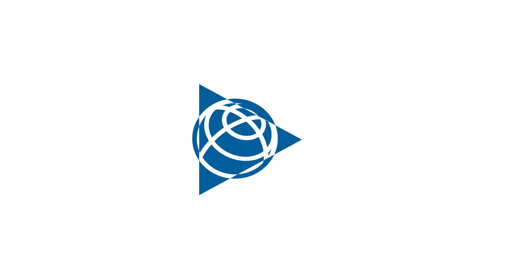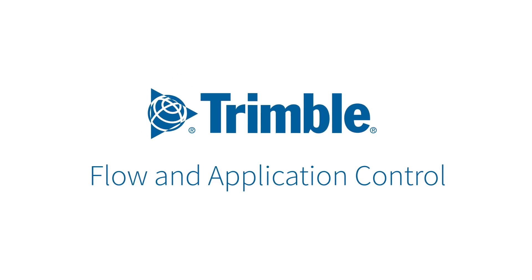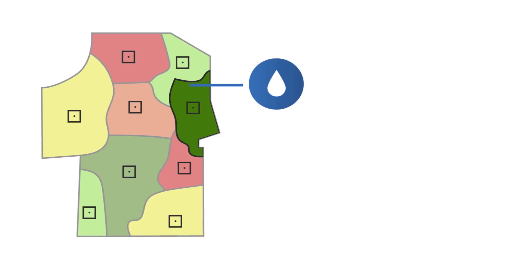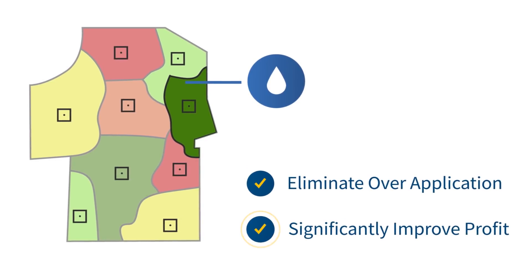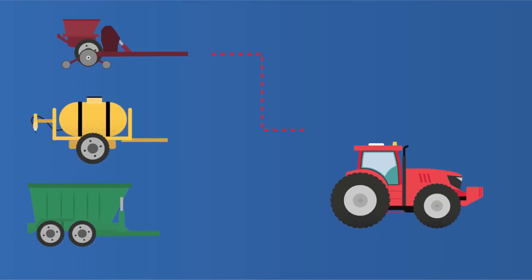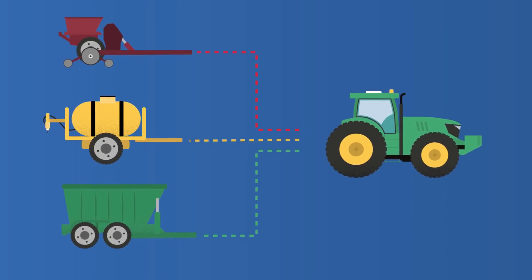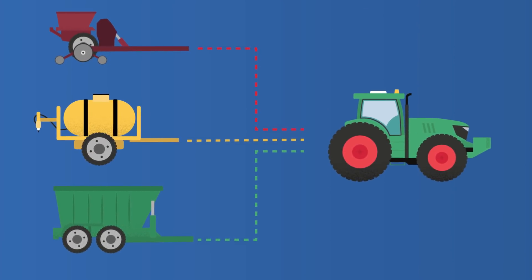This is why Trimble is pioneering the development of automated flow and application control technology that enables you to automatically apply the right amount of input at precisely the right spot, helping you eliminate over-application and significantly improve profit. No matter what brand of tractor or implement you own, Trimble has the technology you need to take control of your inputs.